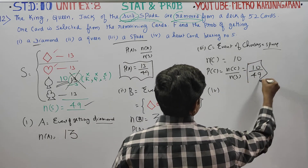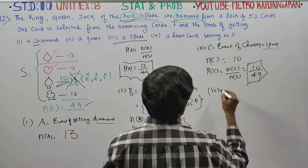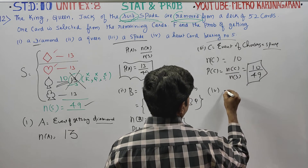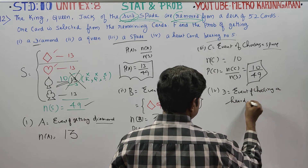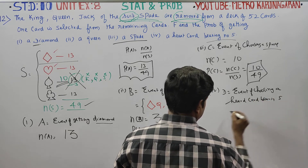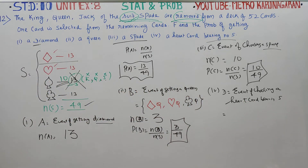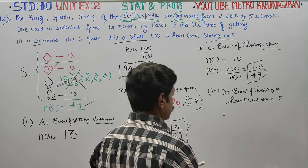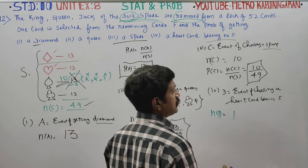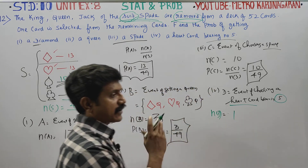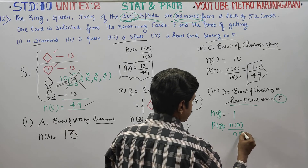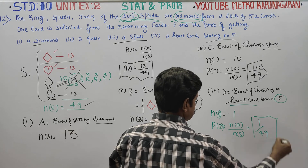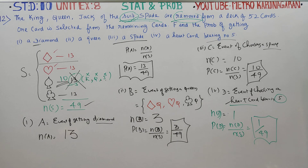The last question: Let D be the event of choosing a heart card bearing the number 5. n of D is equal to 1. Therefore, probability of D is equal to n of D by n of S, which is 1 by 49. This concludes the sum. Thank you.